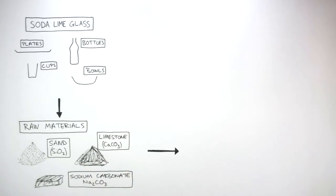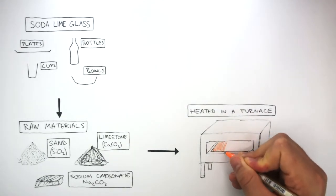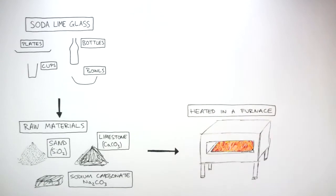These raw materials are then heated in a furnace. This furnace can reach 1,500 degrees Celsius. These raw materials including the sand, limestone and sodium carbonate are heated and melted to 1,500 degrees C forming molten glass.